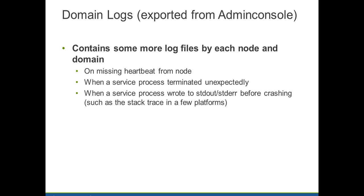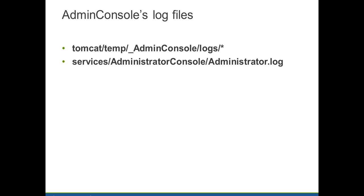The domain log that we export from the admin console contains critical information about any unexpected failure of service processes, standard out, standard error, and some stack traces. The admin console logs — admin console is a separate Java process starting 9.x — and any errors related to this process are written to the administrator log.